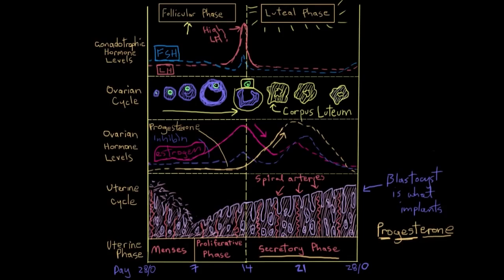Finally, progesterone actually reduces the contractility of the muscles of the uterus. Remember, the uterus has a lot of smooth muscle in its walls. The progesterone reduces the contractility of those muscles so that the growing embryo doesn't get too disturbed and doesn't get expelled out of the mother's body too early by those muscles contracting.